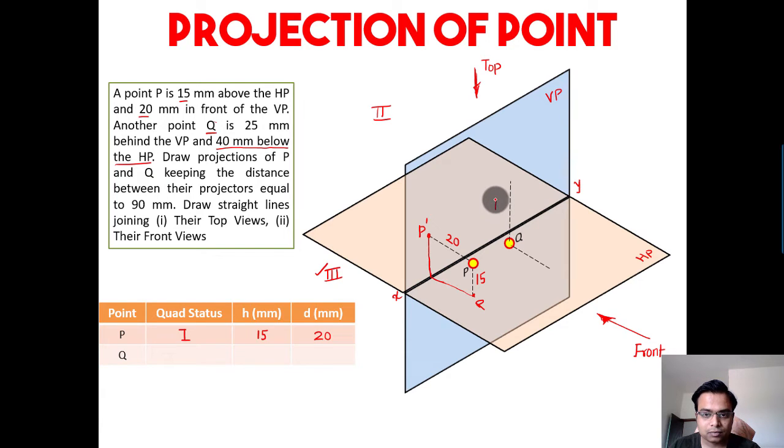And 25 mm behind the VP—this distance is behind the vertical plane. So this is third quadrant. Don't confuse it—this is third quadrant: below and behind.